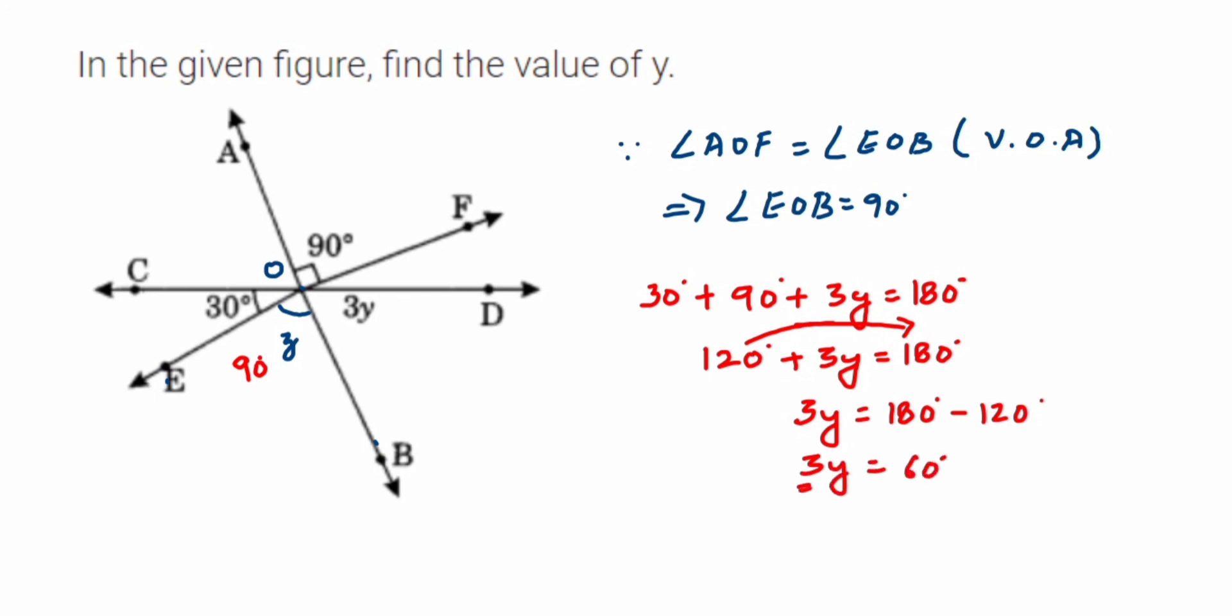Now this 3 is in multiplication with y, so when transposing, multiplication will become division. So y will be equal to 60 upon 3. You can cancel this - 3 ones are 3, 3 twos are 6, and 0. Therefore, we got y value is equal to 20 degrees.